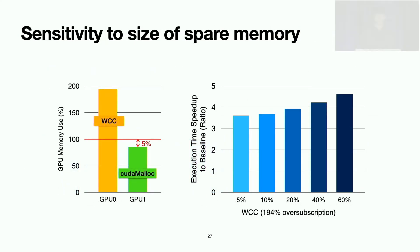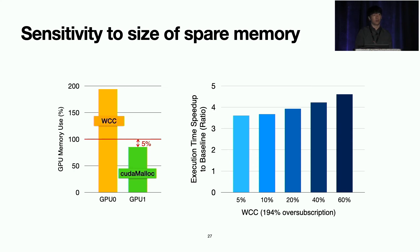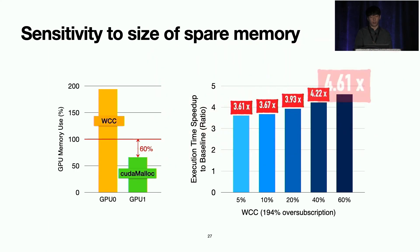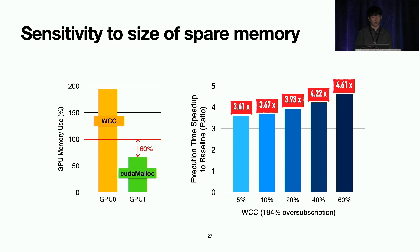We also performed a sensitivity study varying the size of spare memory to determine how much memory needs to be harvested. Using two GPUs, with one running WCC over-subscribing 94% of memory, we varied the spare memory size on GPU 1 from 5% to 60%. With just 5% spare memory, we see 3.6x performance improvement compared to baseline, and performance increases further as spare memory grows. This confirms that even a small 5% harvest of neighbor GPU memory can significantly improve performance.